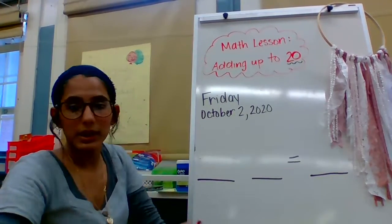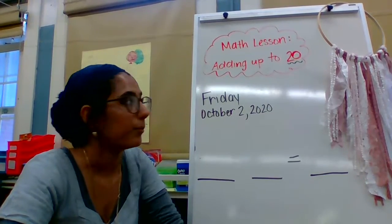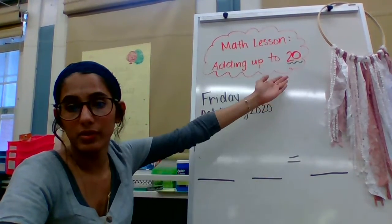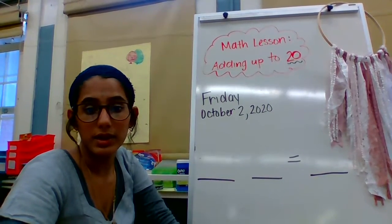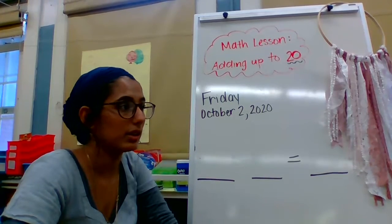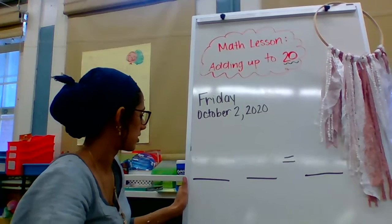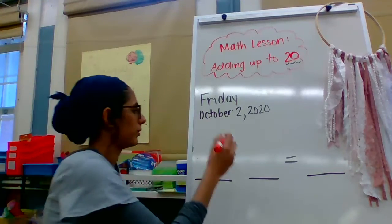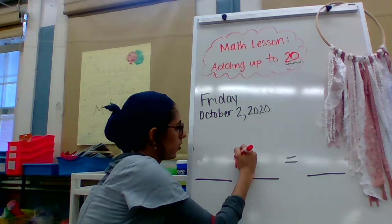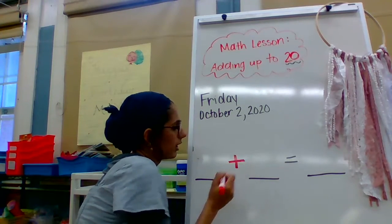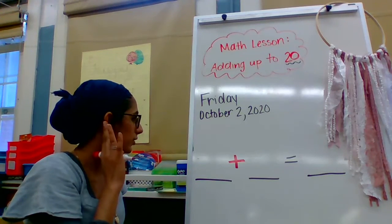All right, welcome back my addition experts. We are going to be adding numbers up to 20. So let's get straight into that because I think you are basically experts at this by now, and I just wanted to practice using higher numbers. All right, before we start, just to recap, what is this symbol right here? What is this symbol right here called? Call it out loud, let me hear you.